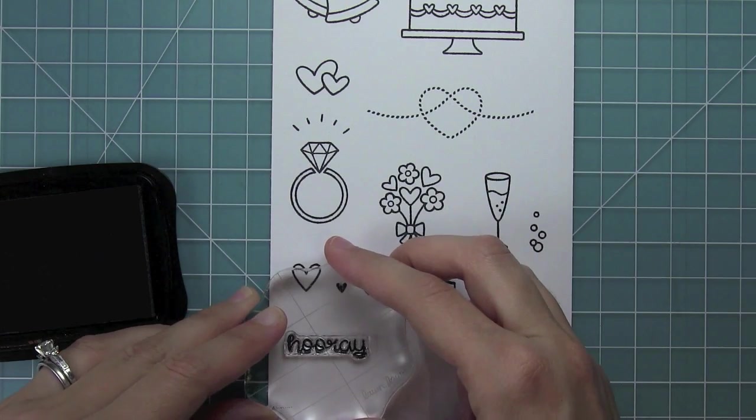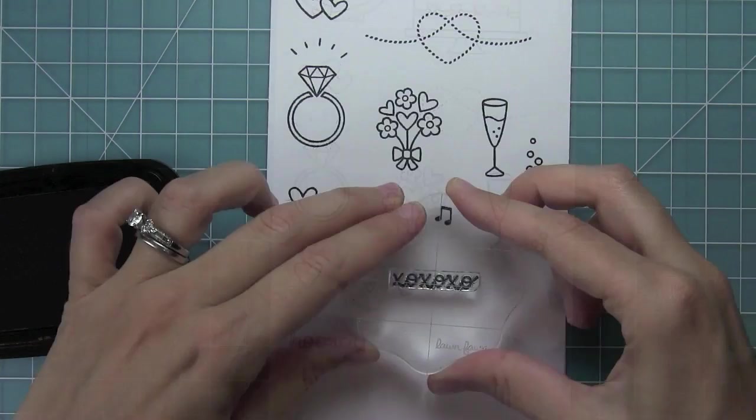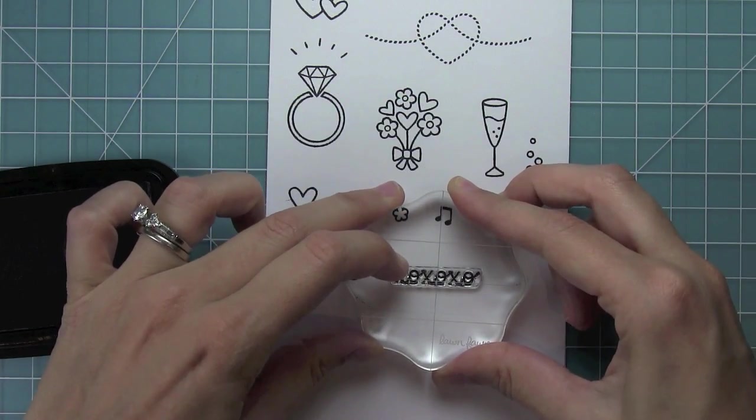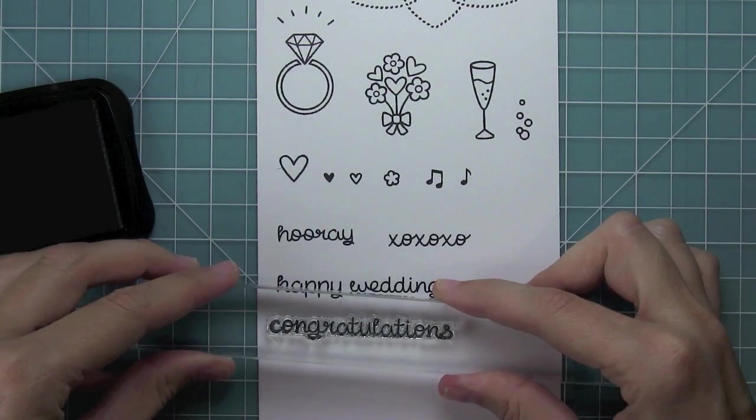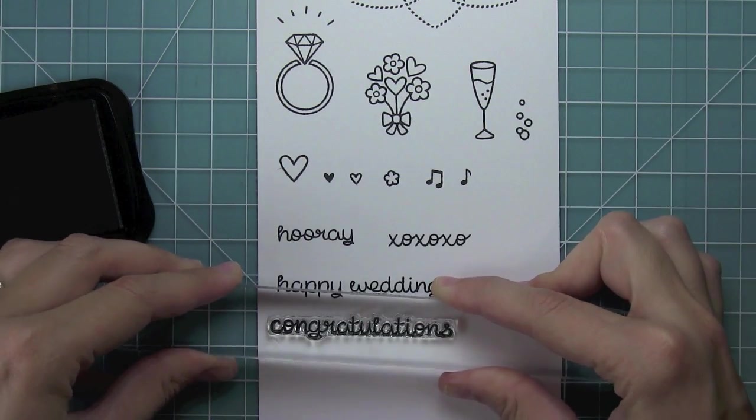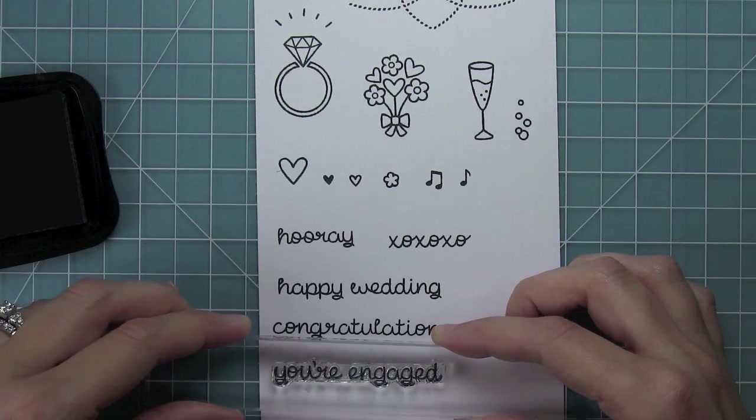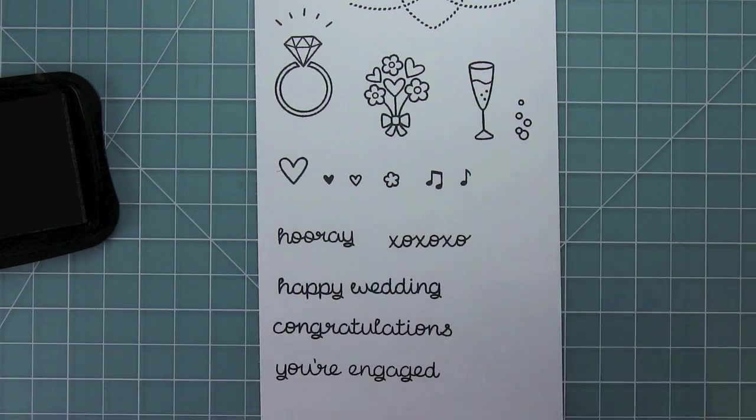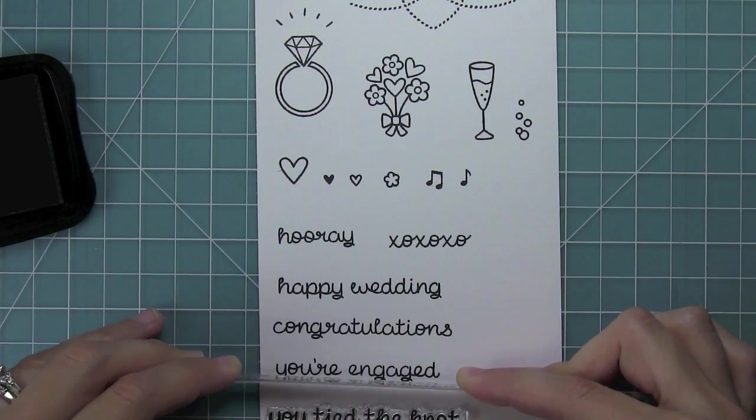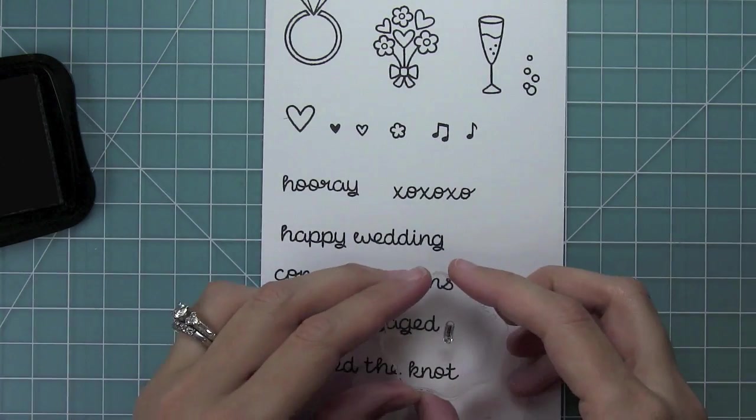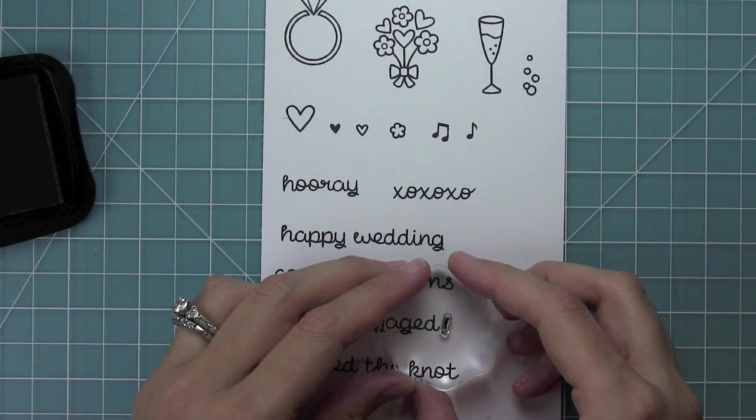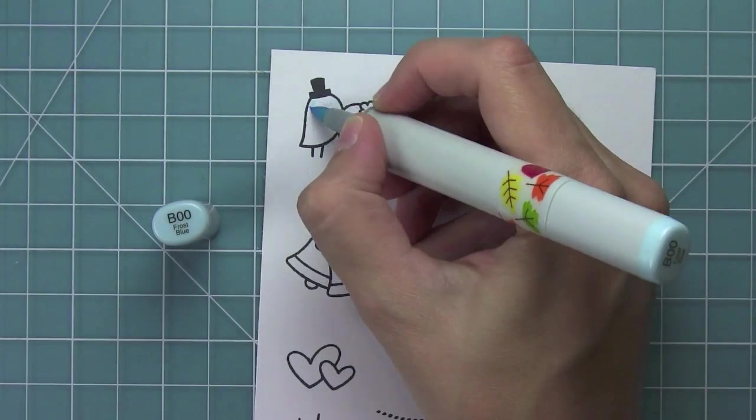Here are the sentiments which I love in this set. We've got hooray, XOXOXO which means you could make this for anniversaries and things like that too. Happy wedding, congratulations, you're engaged which is great. I think a lot of times it's hard to find engagement stuff out there. You tied the knot which goes along with that fun knotted image. And of course an exclamation point that you can add to the end of any of those phrases.